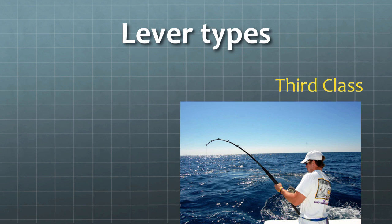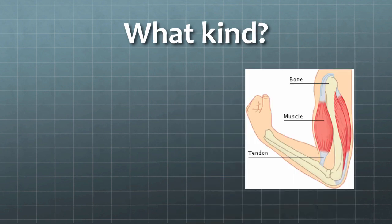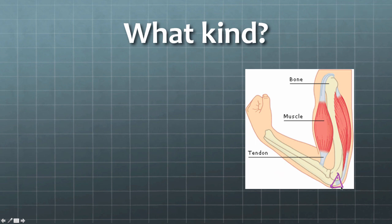What does this have to do with the skeletal system? Well, your joints — the ones that move, at least — are different types of those lever classes. Let's look at this example and figure out what class of lever it is. Here's the pivot point, so that has to be the fulcrum, and the load is right here. Write down on your sheet of paper what type of lever this is.